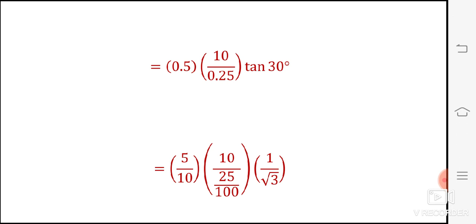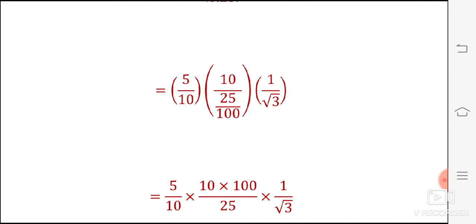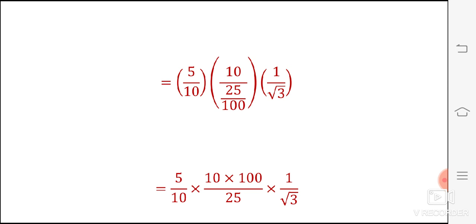Solving this further, write 0.5 as 5 by 10, 0.25 as 25 divided by 100. Tan 30 degree value is 1 by root 3. Further solving this, 5 by 10 into 10 into 100 divided by 25 into 1 by root 3.